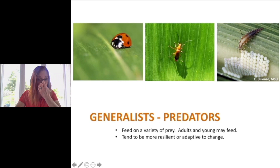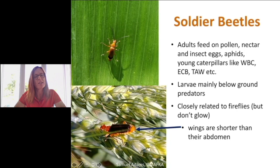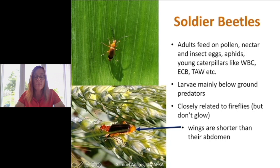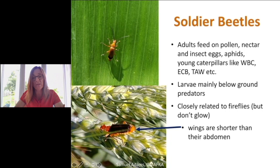Soldier beetles are similar and closely related to fireflies — their wings are shorter than their abdomen, they have very long antennae, and that's a good way to identify them. The next major group everybody is aware of are ground beetles. They mainly dwell on the surface of the soil, but really benefit from no-till and reduced-till scenarios. They play a major role in weed suppression and are weed seed feeders, but also control slugs and insect pests. A recent study shows they actually feed on western bean cutworm larvae.